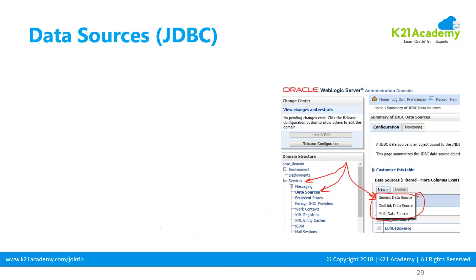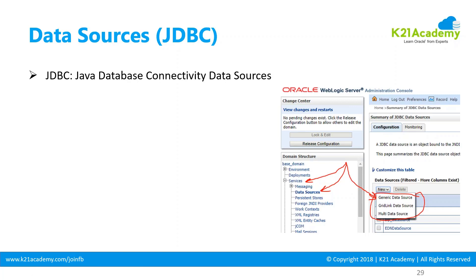Now let's look at JDBC or data sources. WebLogic server is an application server that hosts or deploys applications; however, the data for those applications goes into the database. The way WebLogic connects to the database is using JDBC — Java Database Connectivity. You create a data source, and there are different types of data sources which we will look at now.